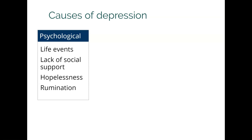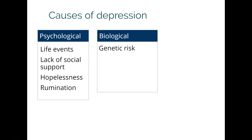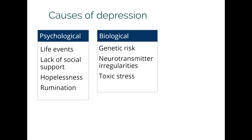Next we can look at biological causes of depression. We know that depression does run in families, so there is definitely the potential for genetic risk. In addition, depression is associated with irregular levels of various neurotransmitters in the brain, though different neurotransmitters may be affected differently for different people. Lastly, there is toxic stress, which occurs when a person is consistently exposed to very high levels of stress they can't control, and it can have very long-term effects including an increased risk of depression.